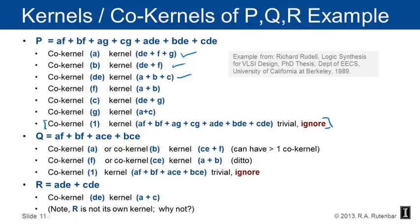Dividing by co-kernel one gives the function back, but since the function is cube-free, that's a trivial kernel we ignore. Q = AF + BF + ACE + BCE has two interesting co-kernels: dividing by A or B both yield kernel CE + F, while dividing by F or CE yields kernel A + B. R = ADE + CDE has one co-kernel DE with kernel A + C. R is not its own kernel because it is not cube-free — DE appears in both terms.